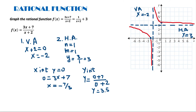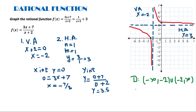If we are looking for the domain of this function, the domain is going to be from negative infinity to negative 2, where negative 2 is not included, union from negative 2 to infinity. If we are looking for the range of the function, the range is going to be from negative infinity to 3, union from 3 to infinity.